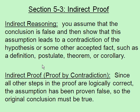This indirect reasoning is all about: if we're trying to prove something, we're going to start out by assuming that it's false, and then show that when it's false, it leads to a contradiction — therefore the original must be true. That's what we get with indirect proof, also known as proof by contradiction. Since all other steps in the proof are logically correct, the assumption has been proven false, so the original conclusion must be true.